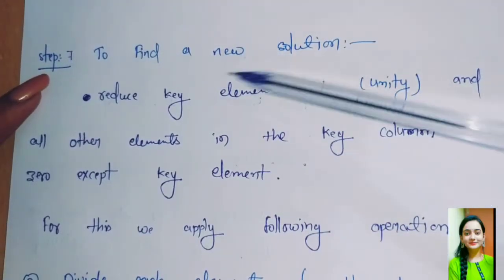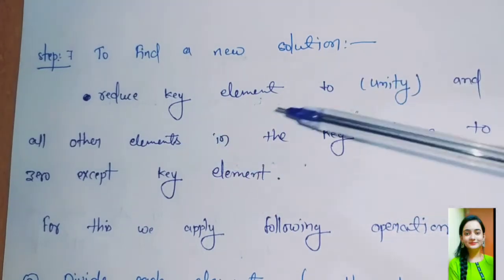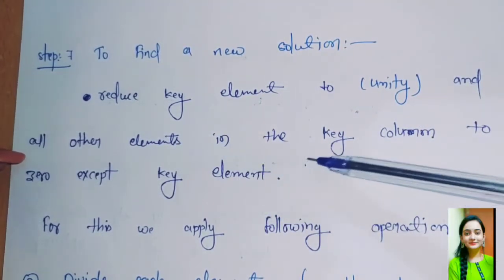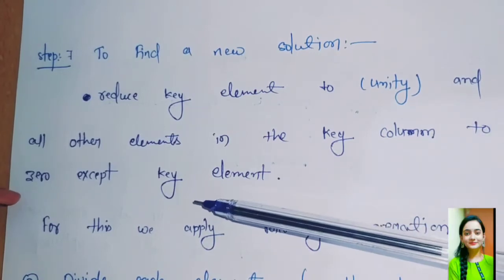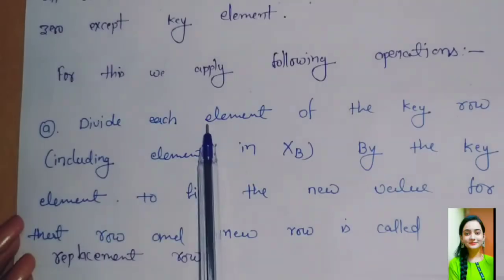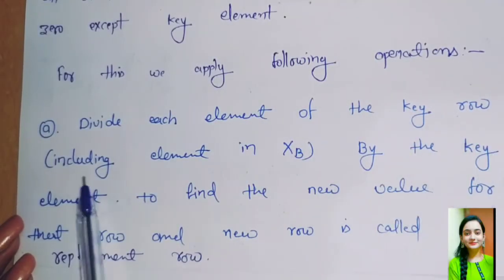Step 7: To find a new solution, reduce key element to unity and all other elements in the key column to 0 except the key element. For this we apply the following operation: divide each element of the key row including element in xb by the key element to find the new value for that row. The new row is called replacement row.